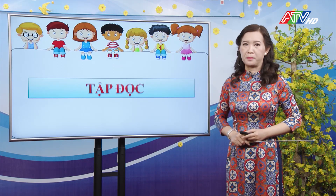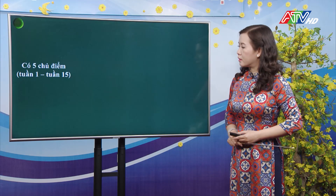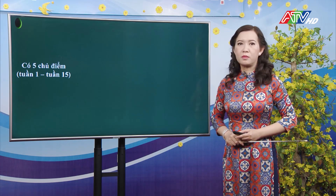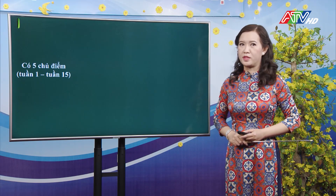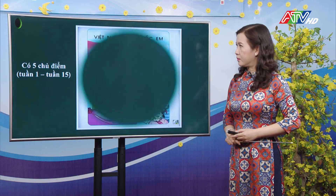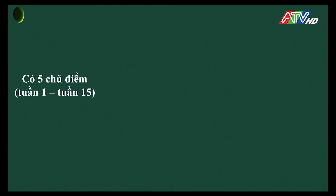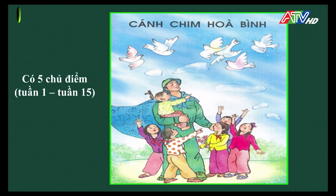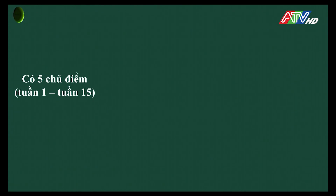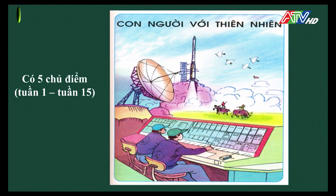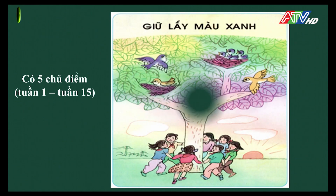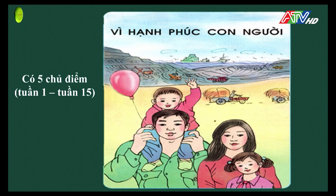Với phân môn tập đọc, từ tuần 1 đến tuần 15, các con đã được học qua 5 chủ điểm: chủ điểm thứ nhất là Việt Nam tổ quốc em; thứ hai là cánh chim hòa bình; thứ ba là con người với thiên nhiên; thứ tư là giữ lấy màu xanh; thứ năm là vì hạnh phúc con người.